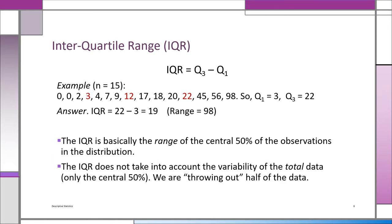The interquartile range is just what it sounds like. If you remember your quartiles, it's the range between Q3 and Q1. Instead of taking the largest minus the smallest, we take the value of the third quartile minus the first quartile. With a sample size of 15, the interquartile range is Q3 minus Q1, or 22 minus 3, which is 19 — as opposed to the range, which would be 98. The range here doesn't give you very much information.